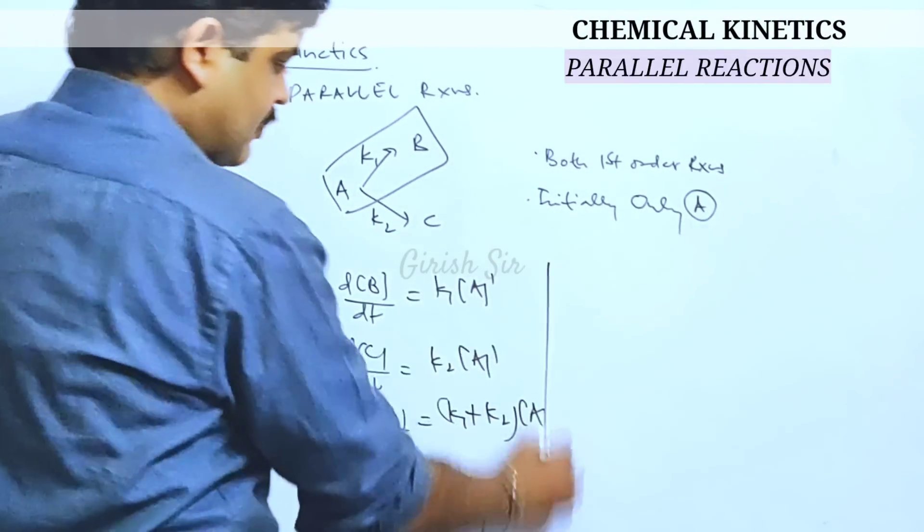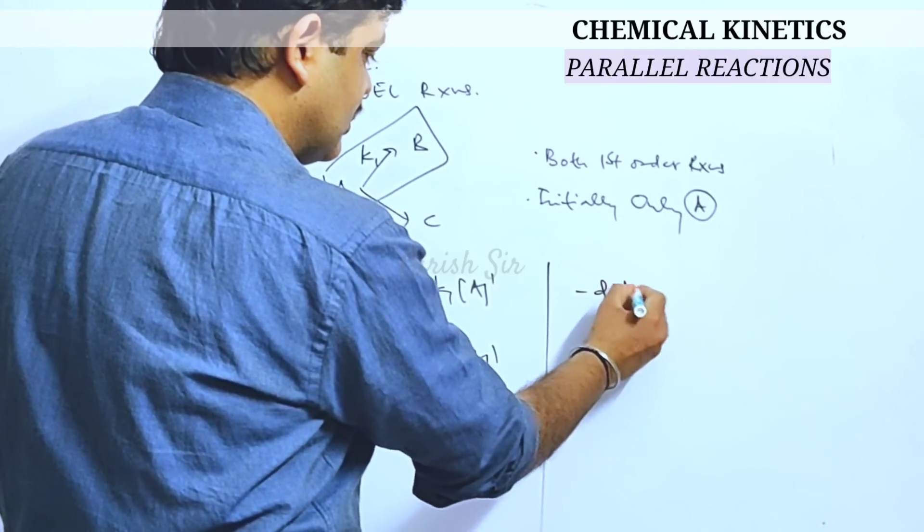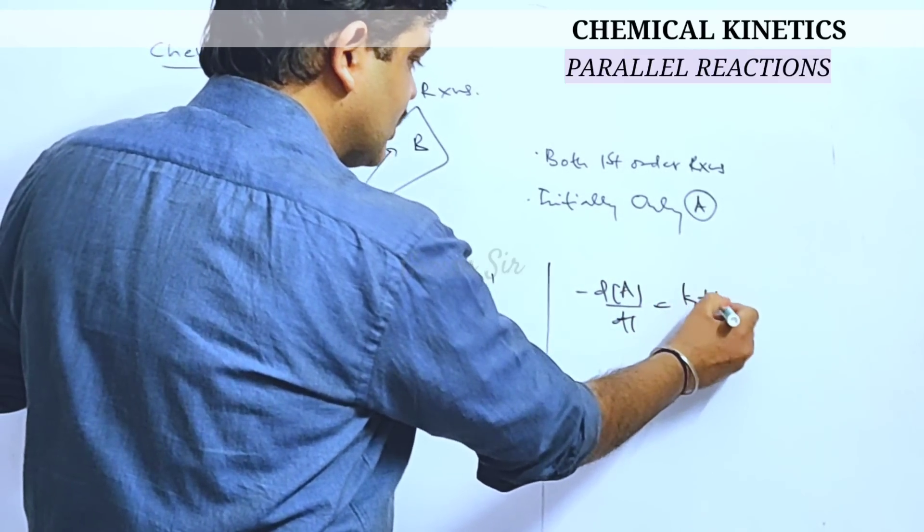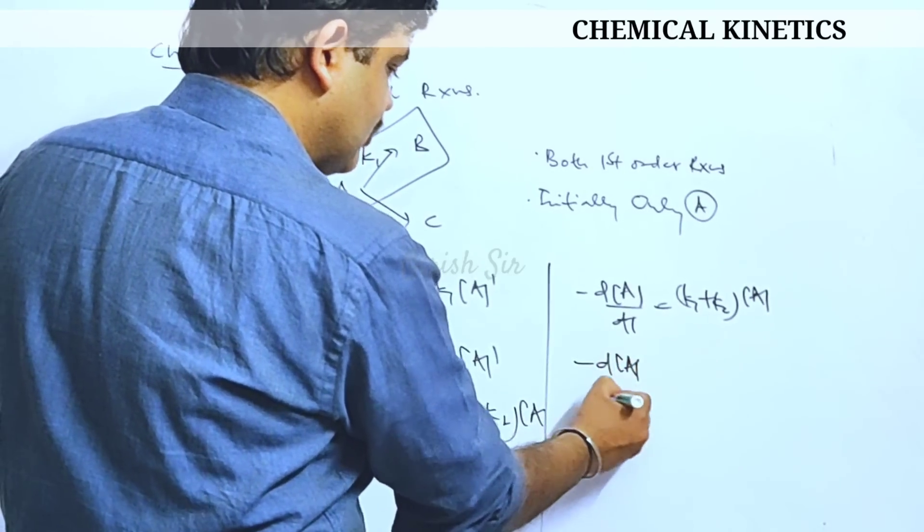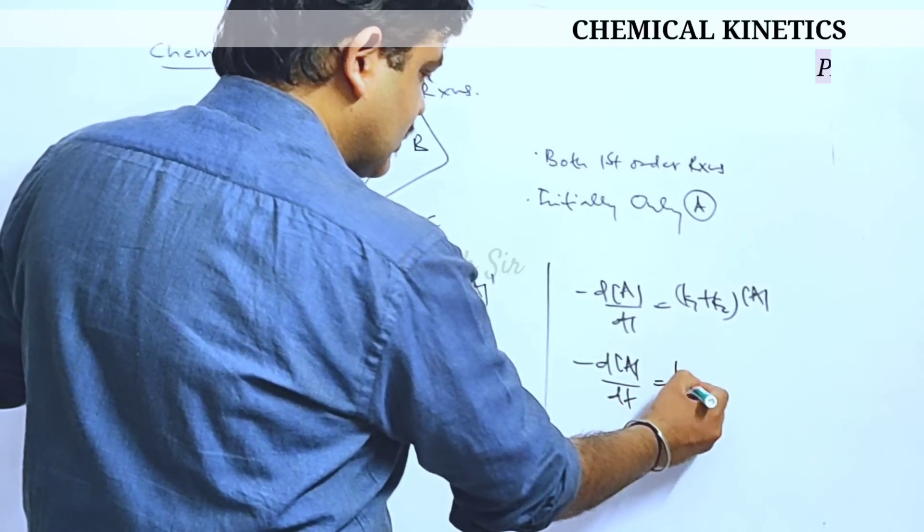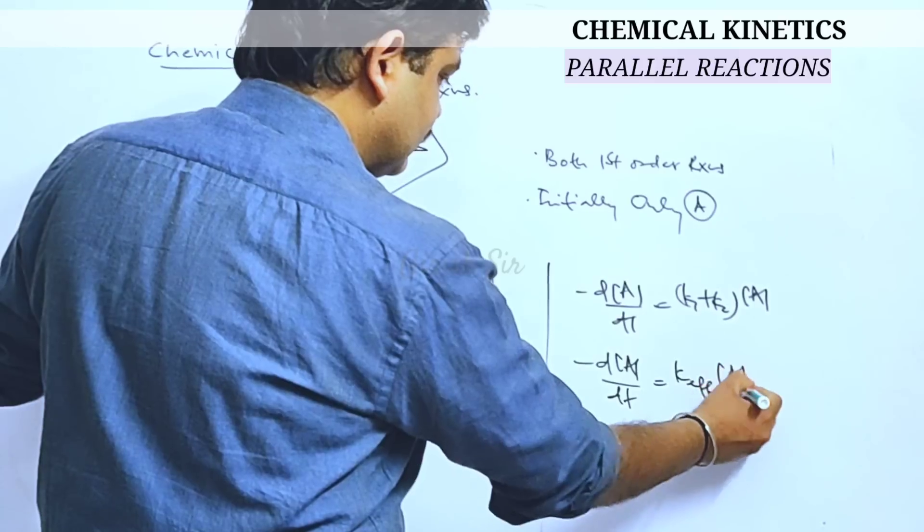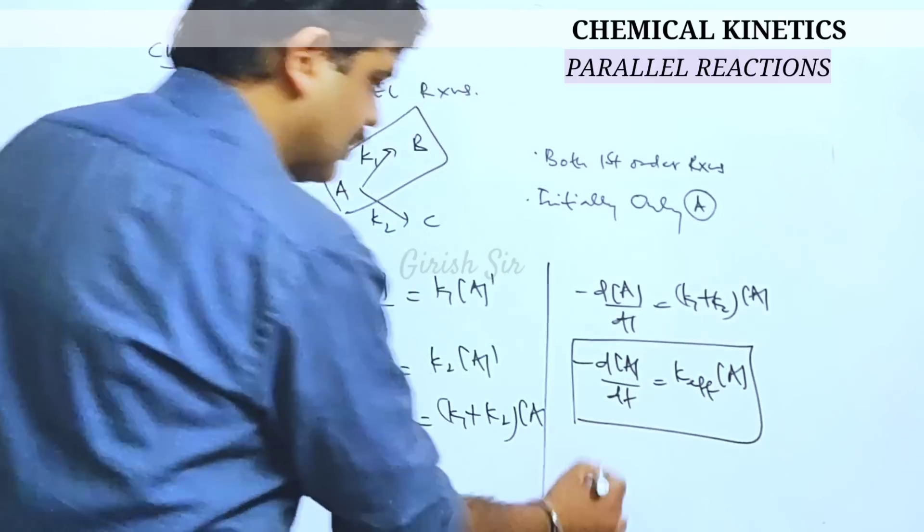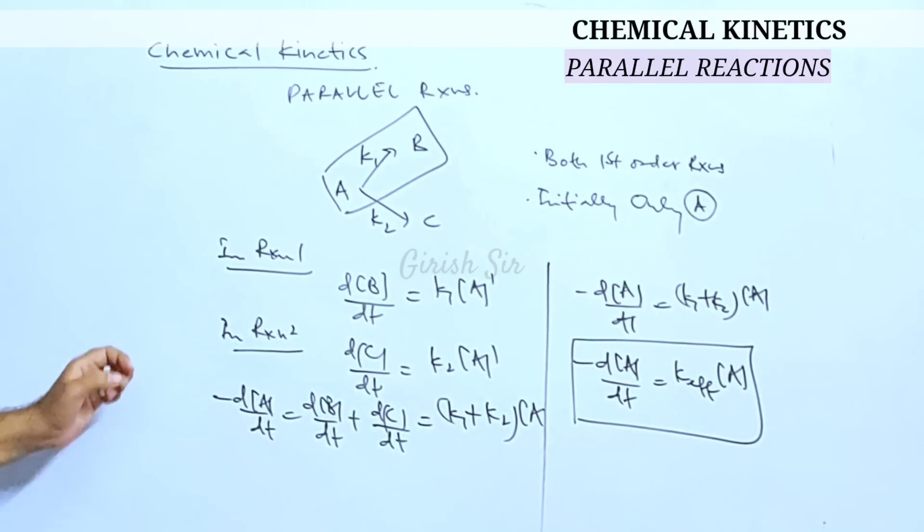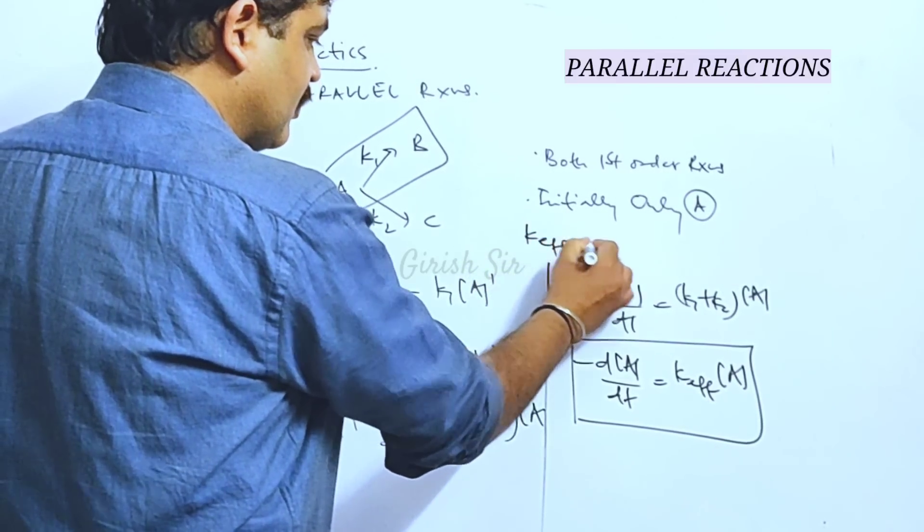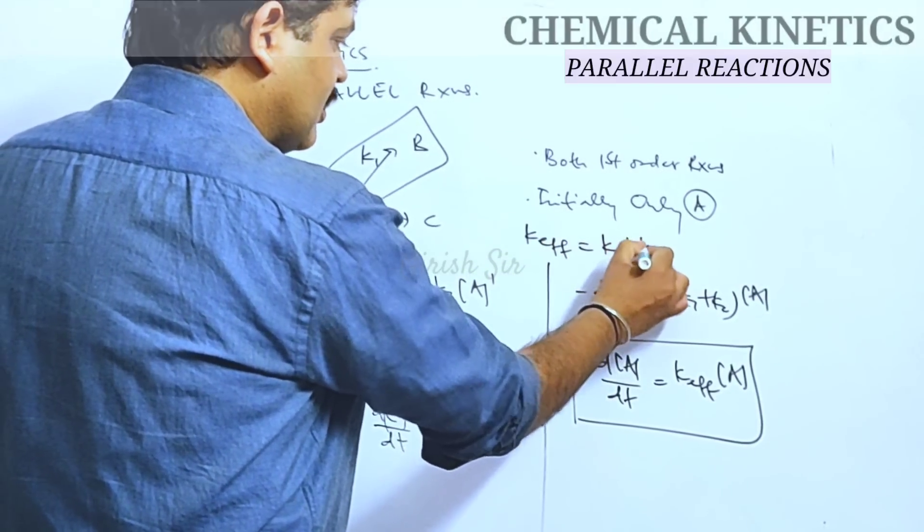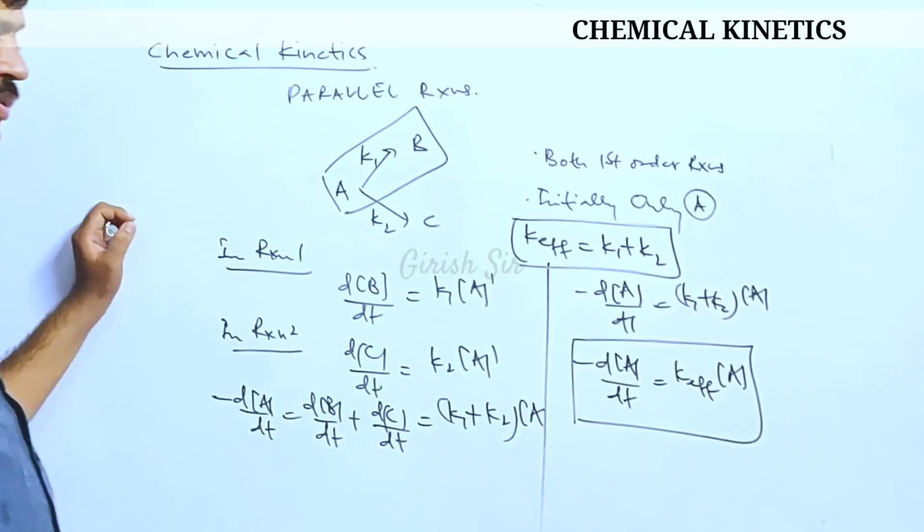Let's look at this equation. Minus dA/dt is equal to K1 plus K2 into A. So this is the differential rate law for A or concentration of A. Here K effective I have used to denote effective rate constant for the parallel reaction and is equal to K1 plus K2.